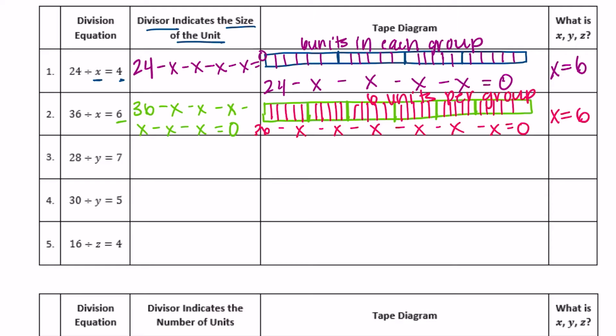Number three: 28 divided by Y equals 7, so we have seven groups, or seven Y's. So 28 minus seven Y's is going to equal zero.